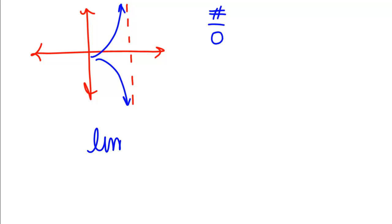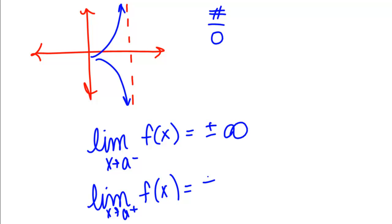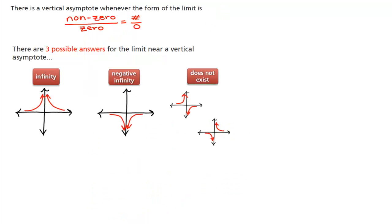That means that if you have the limit as X goes to A from the left side of F of X, that's either going to be plus or minus infinity, and if you have the limit as X goes to A from the right side of F of X, that's either going to be plus or minus infinity. So where does that leave us? That means if you're trying to take the limit in general, there's three possibilities.